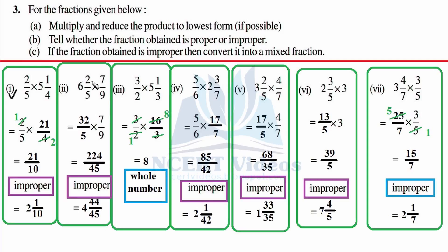Converting to simple fraction: 30 plus 2 is 32 over 5, times 7/9 as a multiplication. 7 times 14 is 98, and 1 gives a numerator of 22, with denominator 45. It is improper again because the numerator is greater than the denominator.